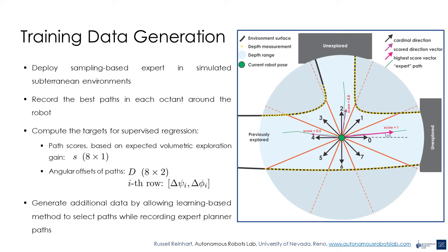A neural network is trained to reproduce these path scores and orientations based on the most recent range images at the time the planner was triggered. In order to explore larger regions of the state space, the partially trained network is also deployed in the same set of simulation environments. Each time the learning-based planner is triggered, the graph-based expert is also triggered, and the path proposed by the expert becomes a training label for the observation obtained by the learning-based planner's action.